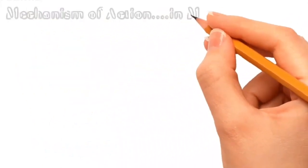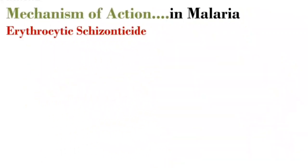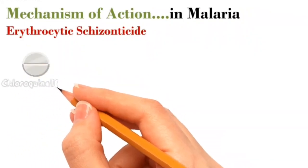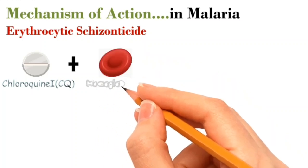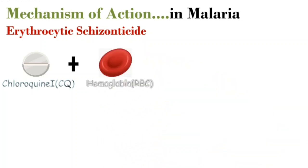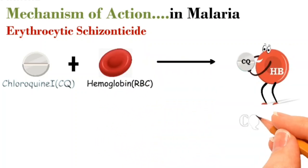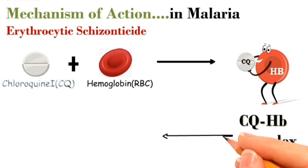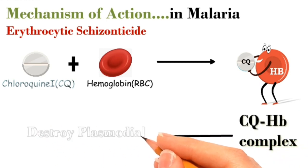Moving into the mechanism of action: in malaria, chloroquine acts as an erythrocytic schizonticide, where it combines with hemoglobin in RBCs to form a chloroquine-hemoglobin complex, which results in destruction of the plasmodial membrane.